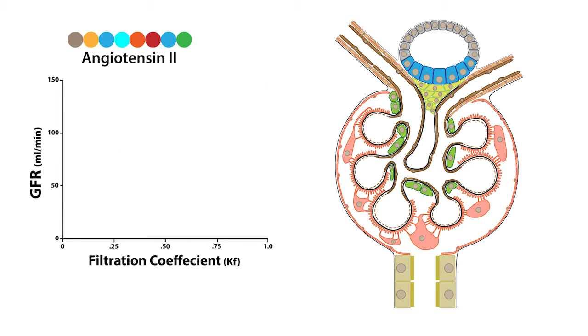Angiotensin-2 also regulates GFR by influencing the filtration coefficient. It does this by promoting the contraction of the intraglomerular mesangial cells, which leads to a reduction in the glomerular capillary surface area, which results in a reduction in GFR.